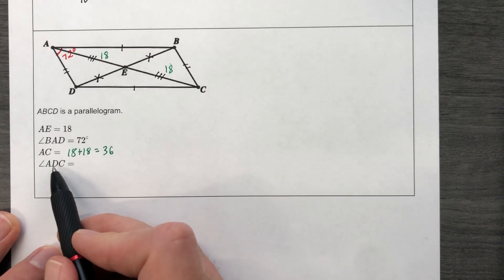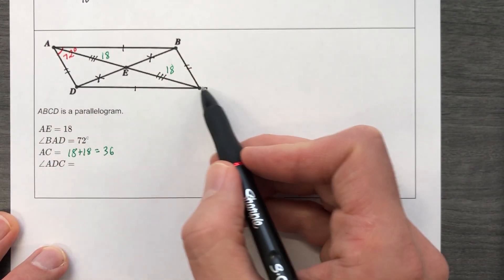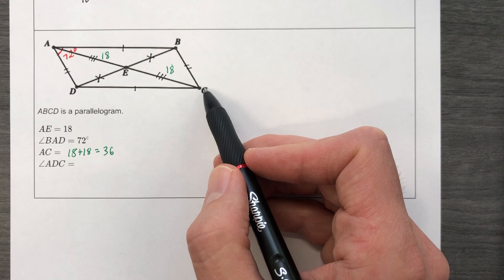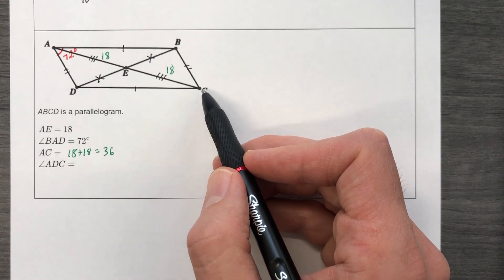And so they're also asking for the angle A, D, C. And A, D, C is, well, let's go ahead and state the obvious. It's not 72. It's not a 72 degree angle, but here's what I do know.